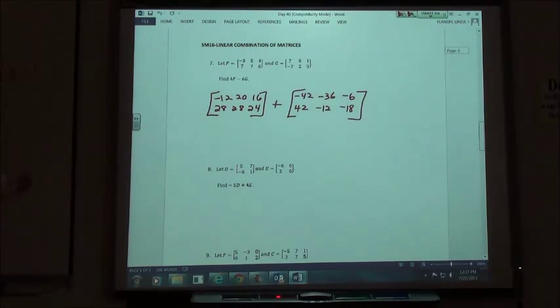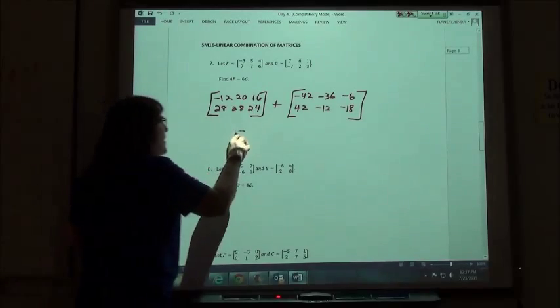So once I've multiplied the first one by 4, the second one by negative 6, then I'm going to add the ones that are in the like spots.